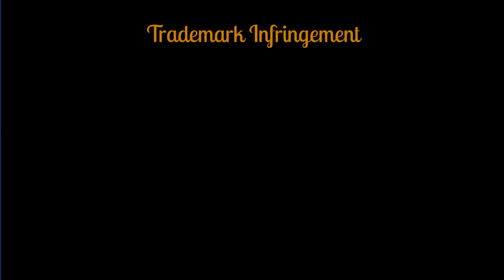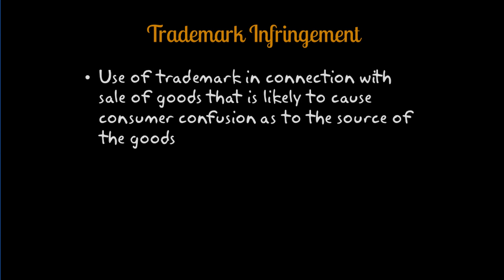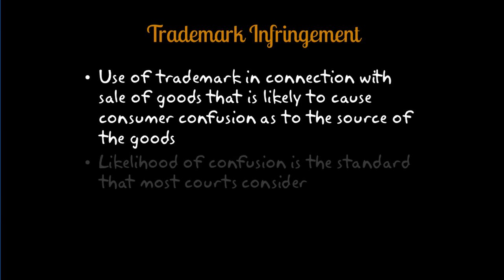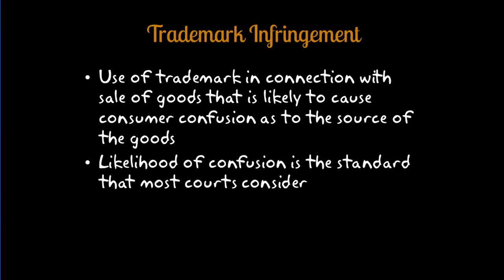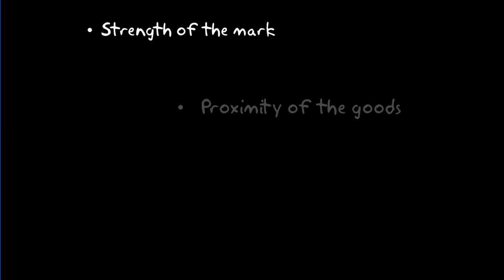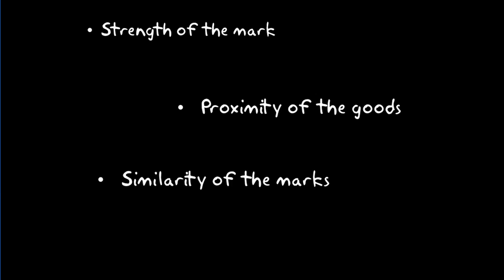Trademark infringement occurs when the use of a trademark in connection with the sale of goods is likely to cause consumer confusion as to the source of those goods or as to the sponsorship or approval of such goods. The definitive question in an infringement claim normally boils down to the likelihood of confusion element. The courts have considered a number of factors, including the strength of the mark, the proximity of the goods, and the similarity of the marks.